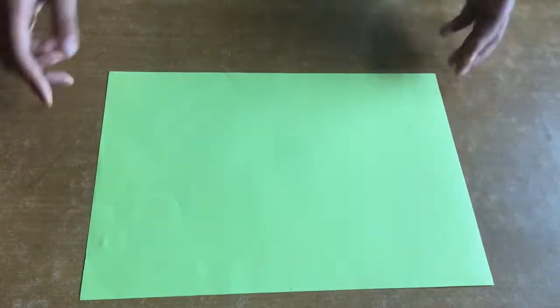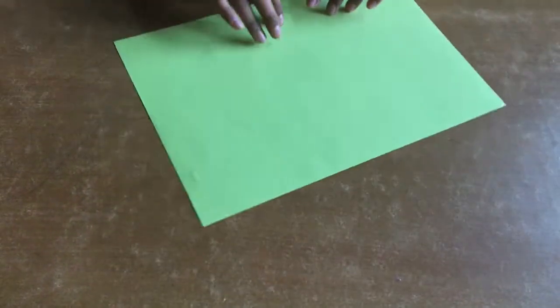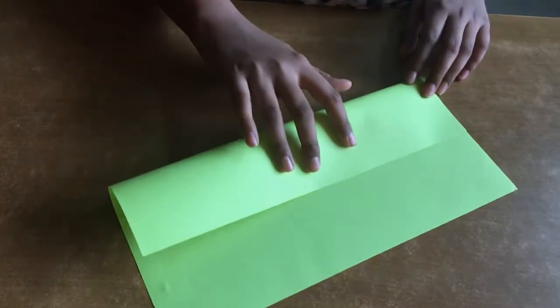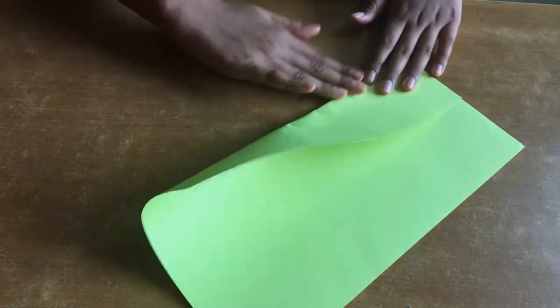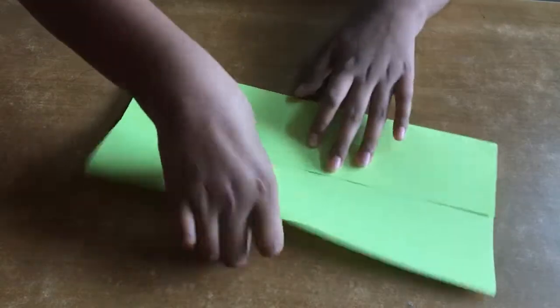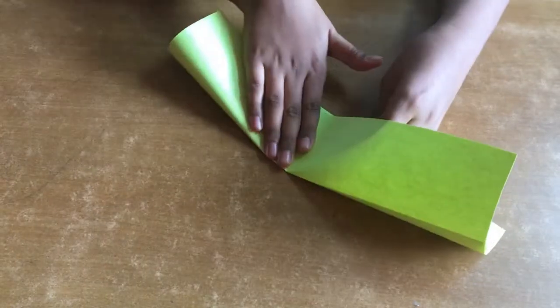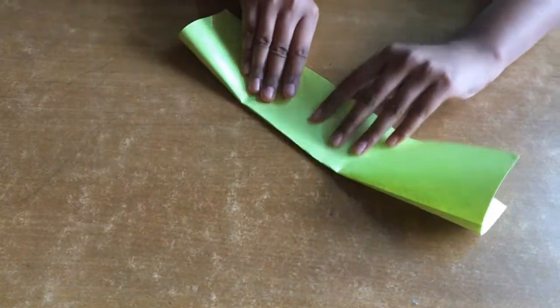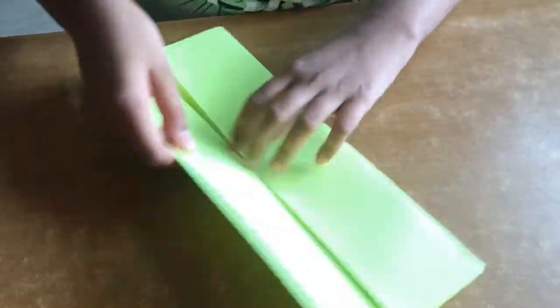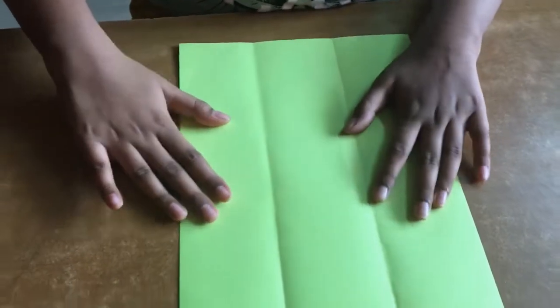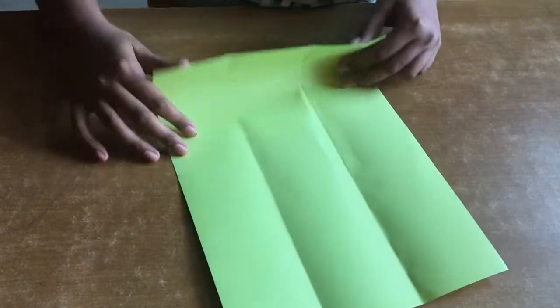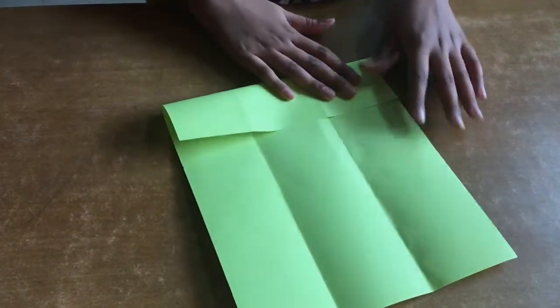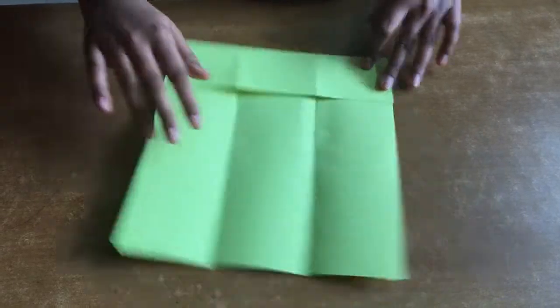So without waiting, let's go to the procedure. Now we should take the A4 sheet, divide it into three equal parts. Then we should fold equal distance like this.